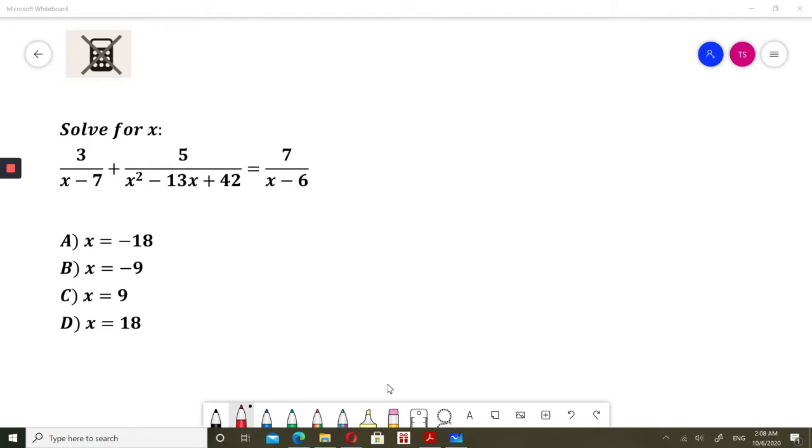First I will check when my denominators are 0 because I cannot divide by 0. So I can write when x minus 7 is 0, of course x is 7.